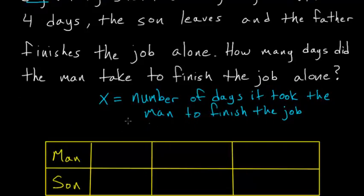And in the first column of this table, we can look at how much each of the man and the son finish in one day. So the man, we know, takes seven days for him to finish a job. So in one day, he will finish one-seventh of the job.